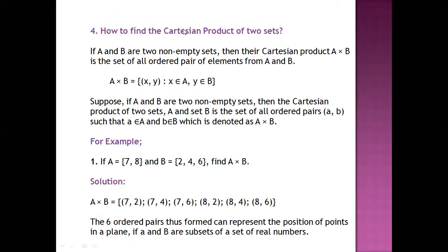Next, how to find the Cartesian product of two sets? Cartesian product is the combination of two sets. We denote it using A cross B.